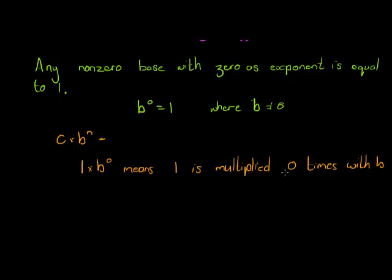In other words, 0 times means no times. And if I say multiplied no times, it means not multiplied. This is just the language reasoning process. So 1 is multiplied zero times with B just means 1 is not multiplied with B. So what do we have? Well, we just have 1.